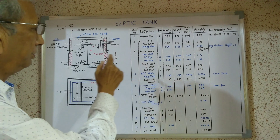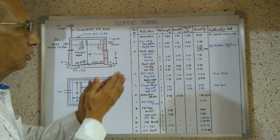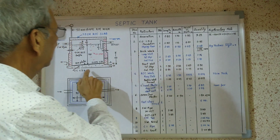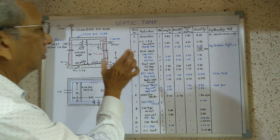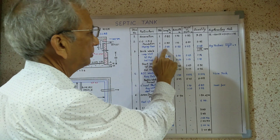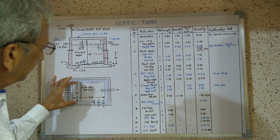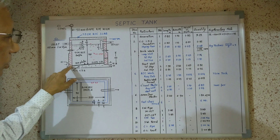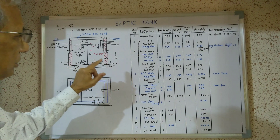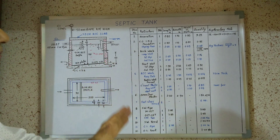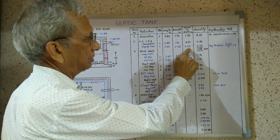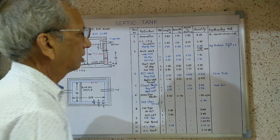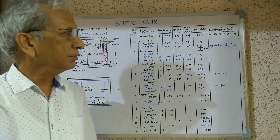In this foundation there is a slope, so we will calculate the concrete of the sloping floor portion separately. Sloping floor — one number: length is the internal length of the septic tank, 2 meters; width is the internal width, 90 centimeters. Thickness: on one side it is 0, on the other side it is 10 cm, so we take the average of 5 centimeters. Total is 0.09 cubic meters.